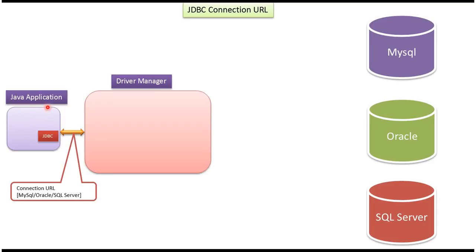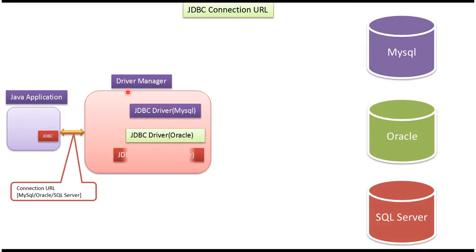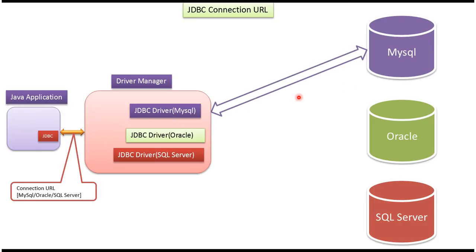Here you can see a Java application which will send a connection URL to the driver manager. The connection URL can be MySQL database specific, Oracle database specific, or SQL Server database specific. Suppose a MySQL-specific connection URL is sent to the driver manager — it will check the list of available drivers and choose the appropriate driver. In this case, it will choose the MySQL-specific JDBC driver and establish a connection to the MySQL database.